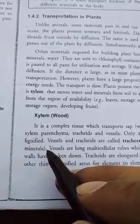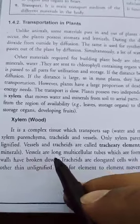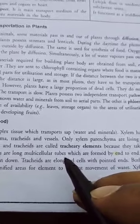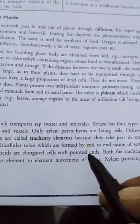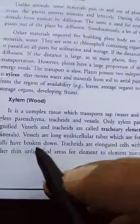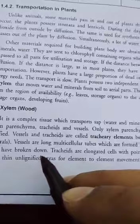What do vessels and tracheids do? They participate in transport of water and minerals. Vessels are long multicellular tubes which are formed by end-to-end union of several cells in which cross walls have broken down.